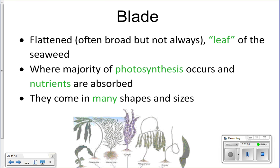The blade is the big flattened part at the top of the algae where most of the photosynthesis takes place. It looks like a leaf but is not technically a leaf, since leaves have specific structures the blade lacks. The blade is also where most nutrients are absorbed — unlike land plants where all nutrients are absorbed through roots.